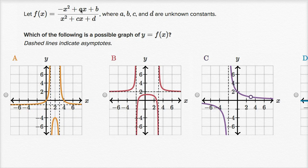Let f of x equal negative x squared plus ax plus b over x squared plus cx plus d, where a, b, c, and d are unknown constants. Which of the following is a possible graph of y equals f of x? And they tell us dashed lines indicate asymptotes.